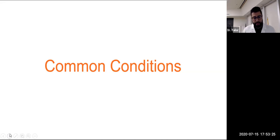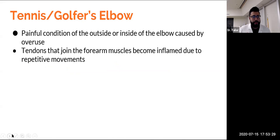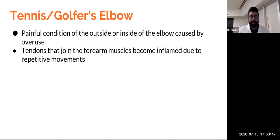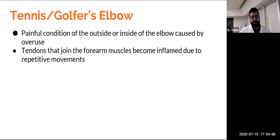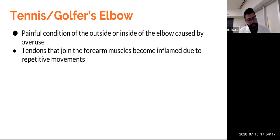Now we're going to get into common conditions, starting with tennis and golfer's elbow. This does not imply that you must play tennis or golf. The medical term for tennis elbow is lateral epicondylitis, and golfer's elbow is medial epicondylitis — painful conditions on the outside and inside of the elbow, respectively. There are tendons that go from the hand all the way up the forearm and connect to the bones on the side of the elbow. The wrist extensors attach to the outside of the elbow, and the wrist flexors attach to the inside. That leverage point at the elbow can sometimes be very irritated.